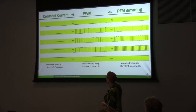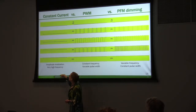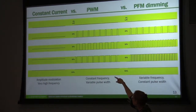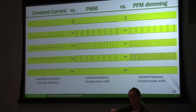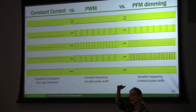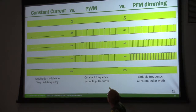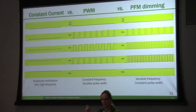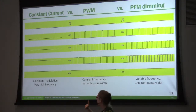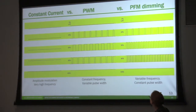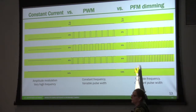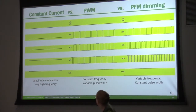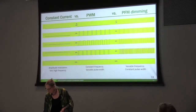If you're using constant current, you're basically taking a steady light output and reducing it to a lower and lower level. If you're using pulse width modulation, you turn the light on and off different periods of time to change the effect of light output. If you're using pulse frequency modulation, you have the same width of the pulse but just space the pulses closer or farther apart. Those are the three ways traditionally used for dimming.